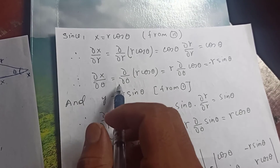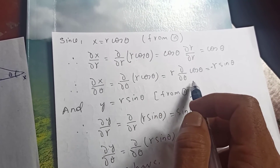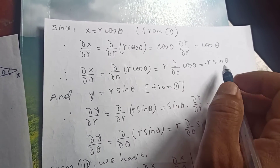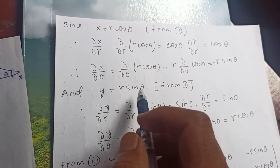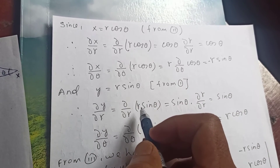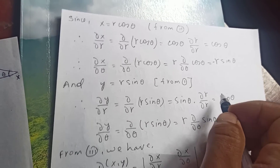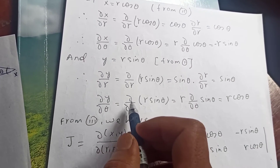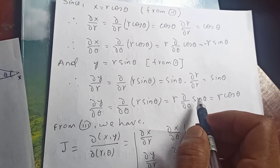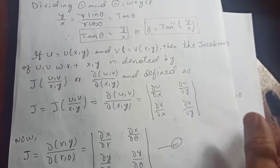Continuing: ∂x/∂θ is the derivative of r cosθ with respect to θ, where r is constant, so ∂x/∂θ = −r sinθ. From equation 1, y = r sinθ, so ∂y/∂r = sinθ. And ∂y/∂θ is the derivative of r sinθ with respect to θ, where r is constant, giving ∂y/∂θ = r cosθ.